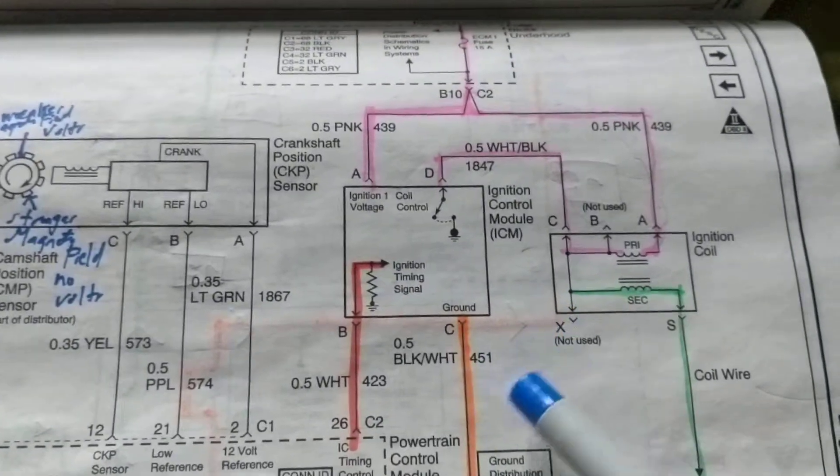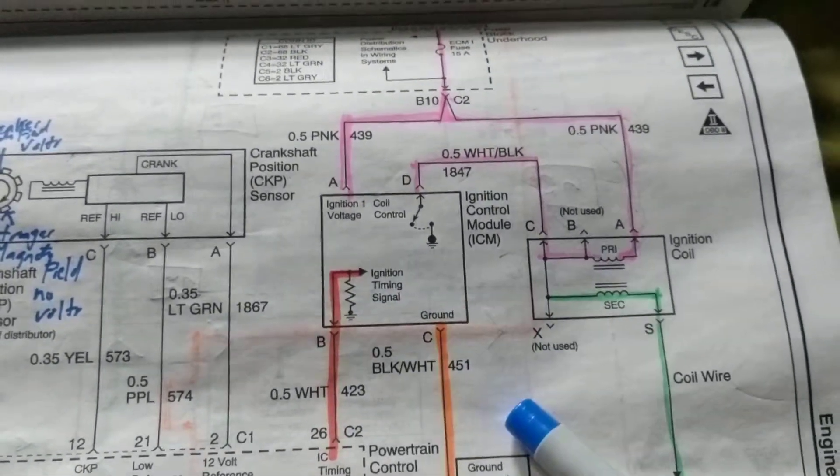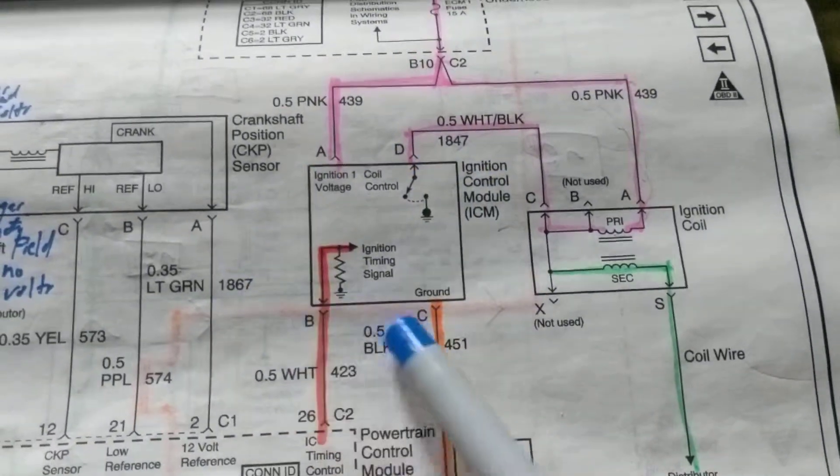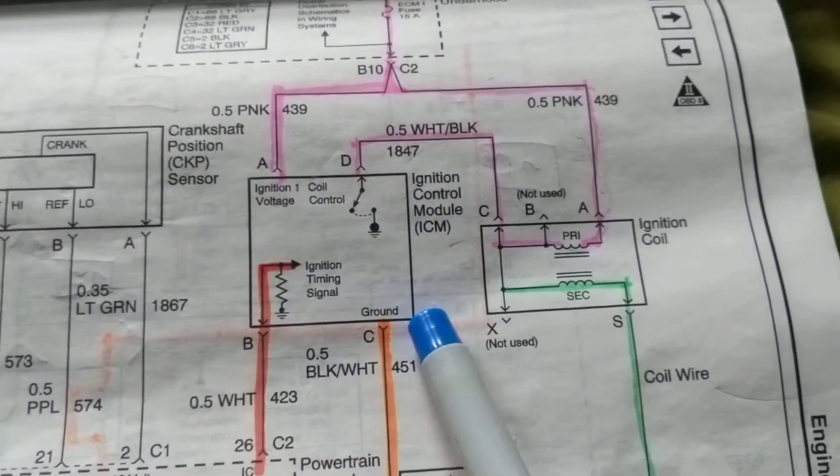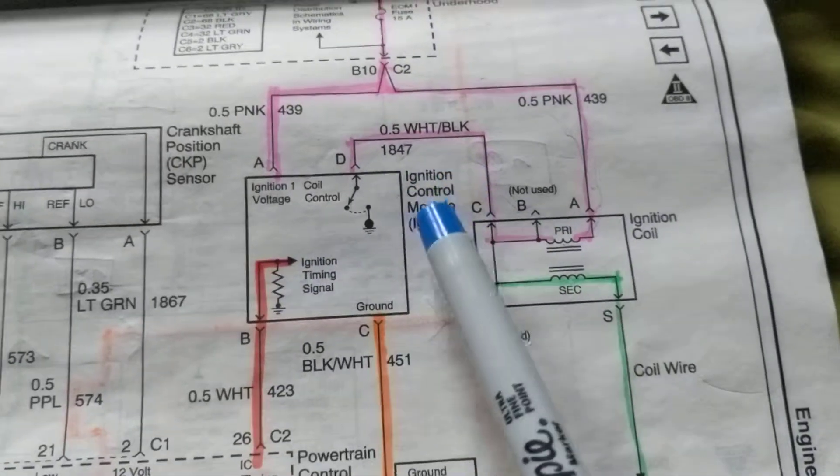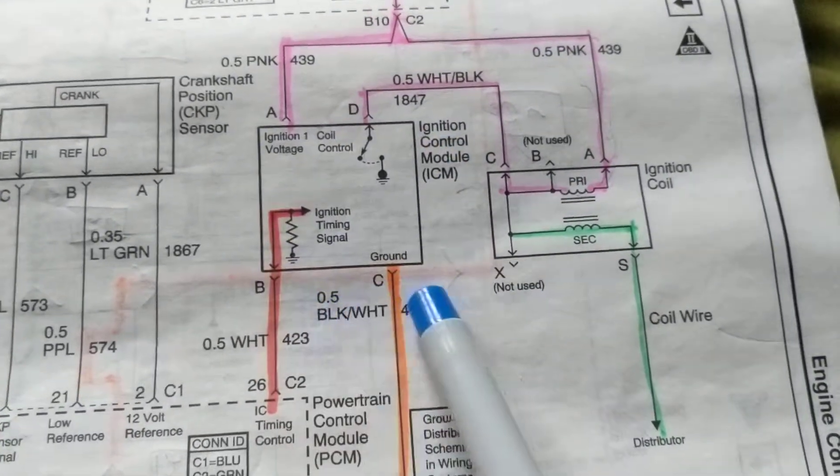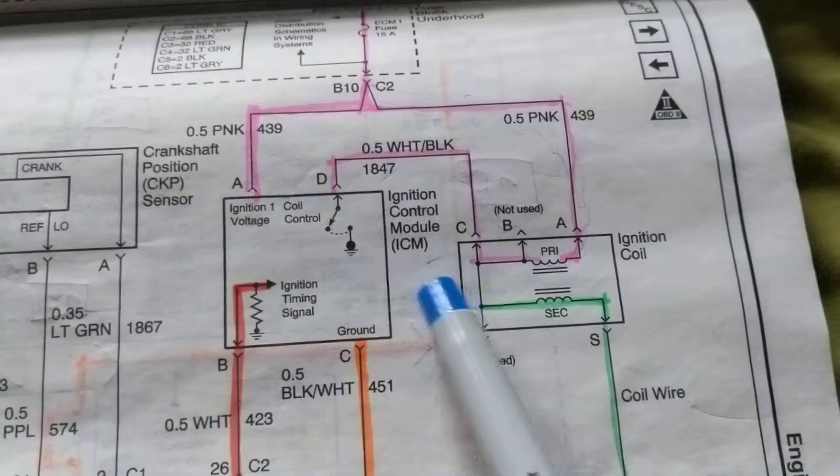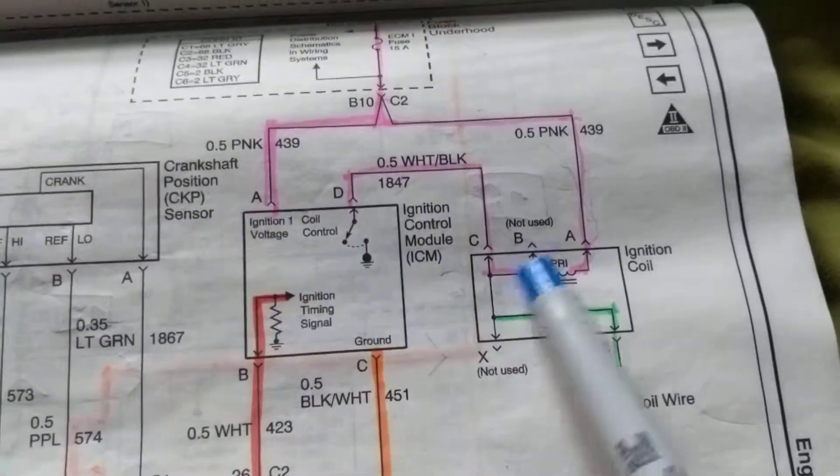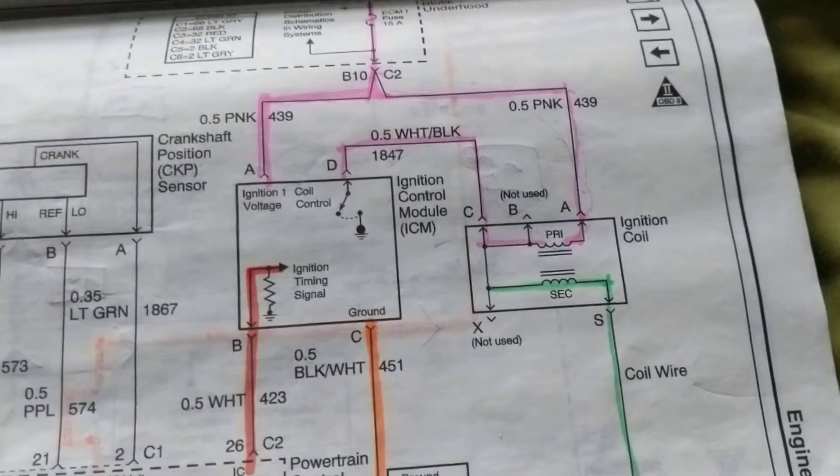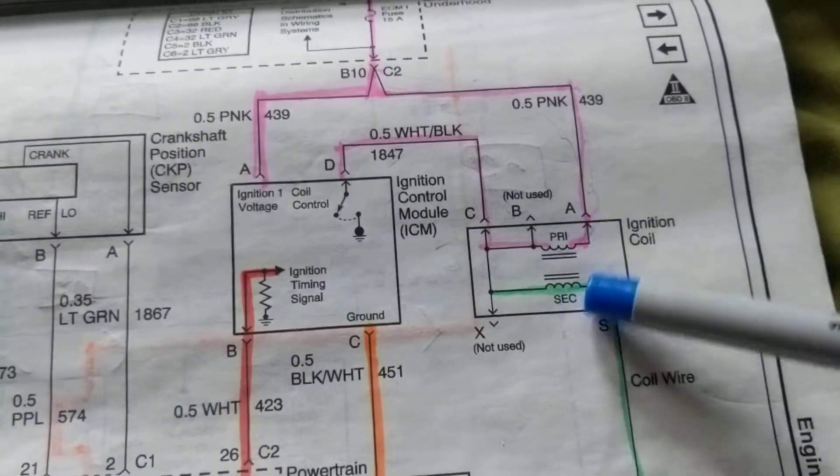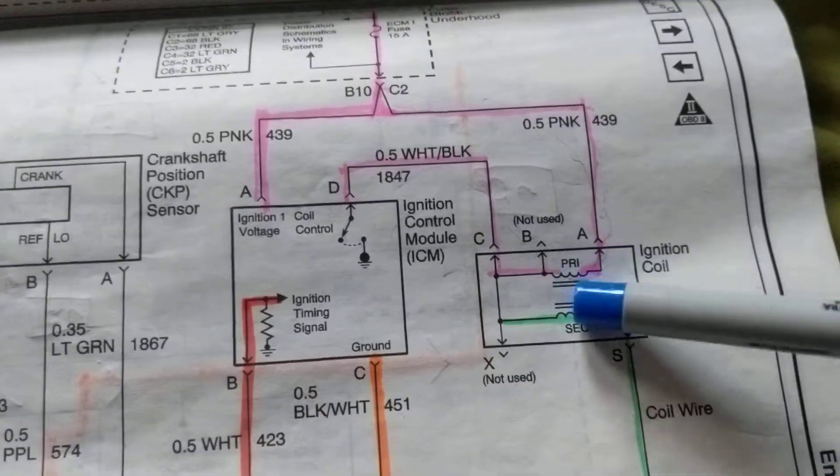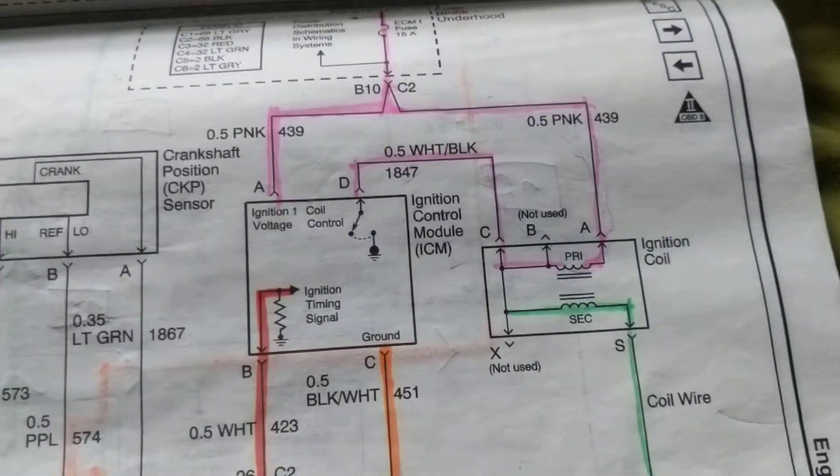Now when it comes to the ignition control module, we know we need a spark. And this is part of this module, as you see over here, ignition control module for a Chevy, we're discussing a Chevy. In order to get spark, we have to have variable things. We have a primary, we have a secondary transformer, with a core, magnetic core in between.